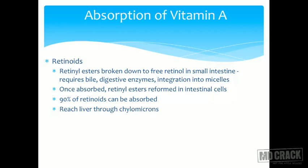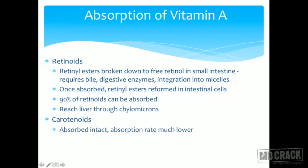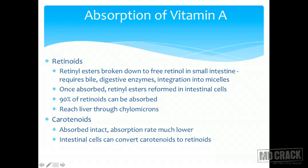Chylomicrons travel through the thoracic duct to reach the systemic circulation, passing through skeletal muscle, adipose tissue, and various extra-hepatic tissues. It is finally the chylomicron remnant — containing the absorbed vitamin A — that reaches the liver. For carotenoids, which are plant sources, they are absorbed intact, but the absorption rate is much lower. The intestinal cells then convert carotenoids into retinoids.